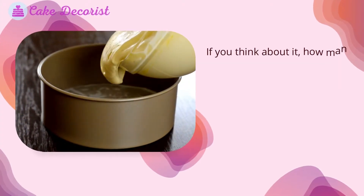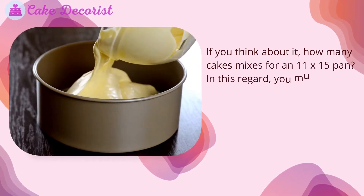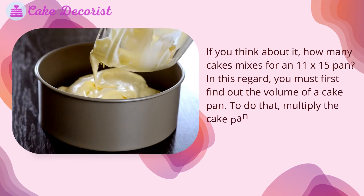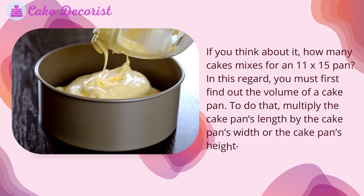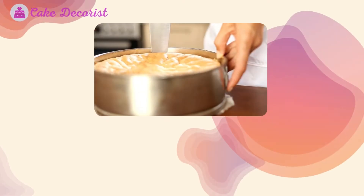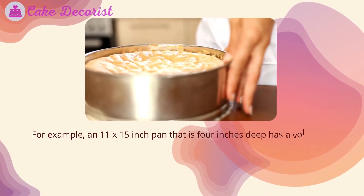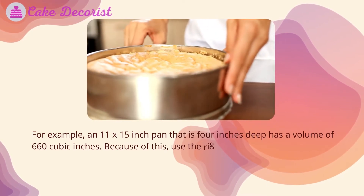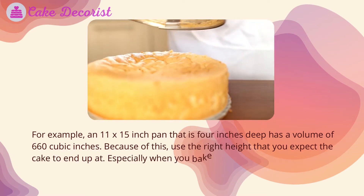If you think about how many cake mixes are needed for an 11 by 15 pan, you must first find out the volume of a cake pan. To do that, multiply the cake pan's length by the cake pan's width by the cake pan's height. For example, an 11 by 15 inch pan that is 4 inches deep has a volume of 660 cubic inches. Use the right height that you expect the cake to end up at.